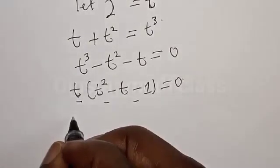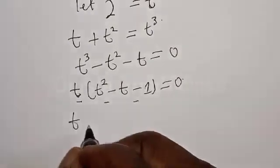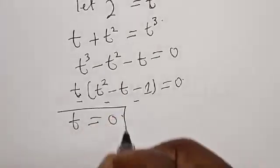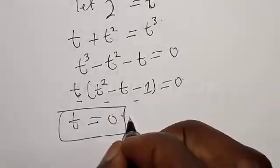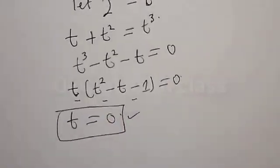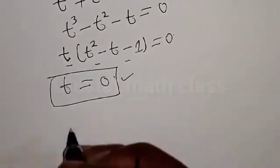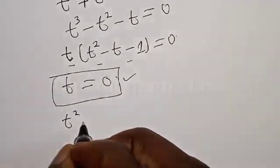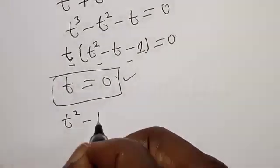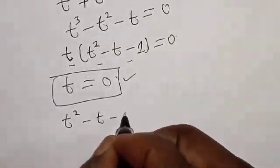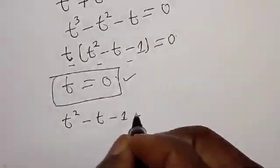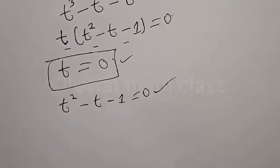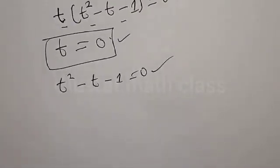Therefore we have t equals zero, and we have t squared minus t minus 1 is equal to zero. Then t equals zero is one of the roots. We also have t squared minus t minus 1 equals zero, which is a quadratic equation, and we solve it using the quadratic formula.